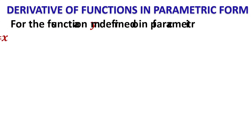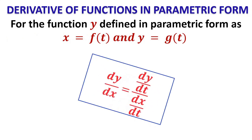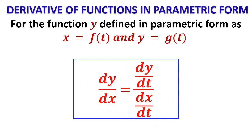Let us understand the derivative of functions in parametric form. Since both functions are defined parametrically, we cannot find dy/dx directly because y is not expressed in terms of x. Therefore, since y is expressed in terms of t we find dy/dt, and since x is expressed in terms of t we find dx/dt. Therefore dy/dx = (dy/dt) / (dx/dt). If expressed in terms of θ, it is (dy/dθ) / (dx/dθ).